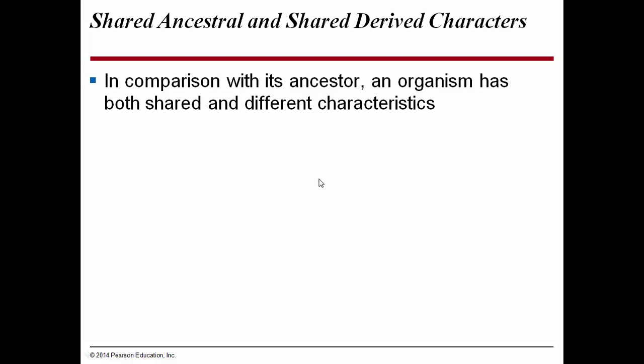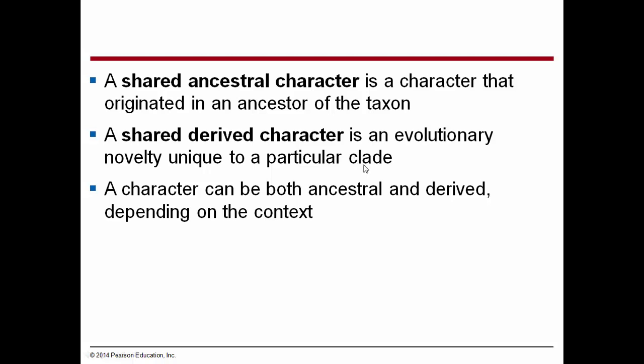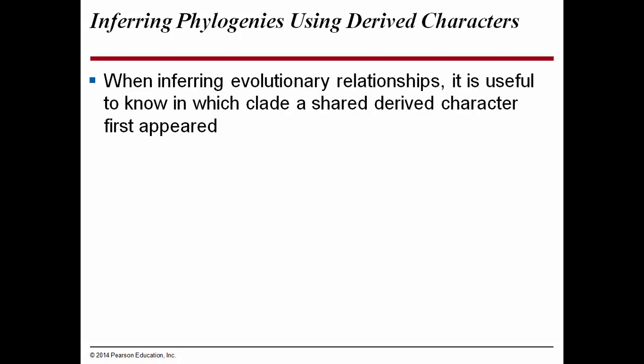In comparison with its ancestor, an organism has both shared and different characteristics. A shared ancestral character is one that originated in an ancestor of the taxon. A shared derived character is an evolutionary novelty unique to a particular clade. For example, when looking at all the cetaceans that share a common ancestor, some are toothed whales and some are baleen whales. The baleen trait is a shared derived character of all the baleen whales — fin whales, minke whales, blue whales, humpback whales all share that same derived character. When inferring evolutionary relationships, it is useful to know in which clade a shared derived character first appeared.